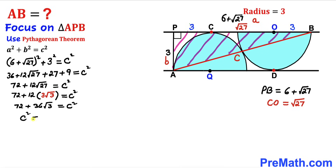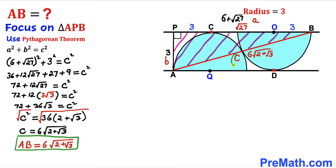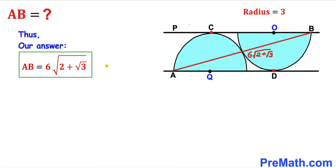Now, √27 simplifies to 3√3, so replacing that gives 72 + 12·3√3 = C², which is 72 + 36√3 = C². We can factor out 36: C² = 36(2 + √3). Taking the square root on both sides, C = 6√(2 + √3). Since C is the same as AB, our AB length turns out to be 6√(2 + √3).